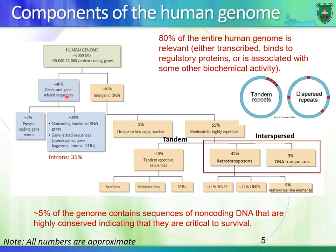If you look at that 40%, only 2% of the human genome codes for proteins. This is really a small portion of the whole human genome — out of 3 billion base pairs, only 2% would code for proteins, the functional molecules of cells. 38% of the human genome would code for non-coding RNA molecules.